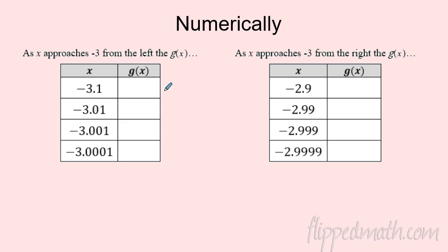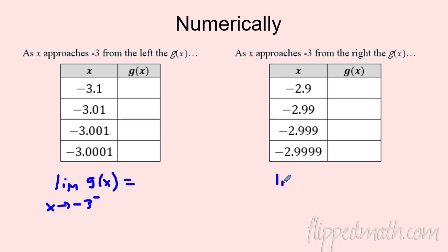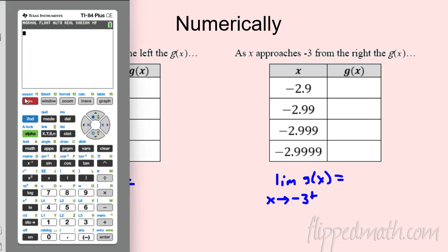Same example — let's make a table of values to verify. Here I'm approaching -3 from the left, and here from the right. It does get a little weird with negatives — to be farther from 0 is more negative, or from the left, and closer to 0 means approaching from the right. We're proving the same thing with a table of values.